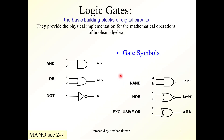Logic gates are the basic building blocks of digital circuits. They provide the physical implementation for the mathematical operations of boolean algebra. We have talked before about the AND logic gate, the OR logic gate, and the inverter.